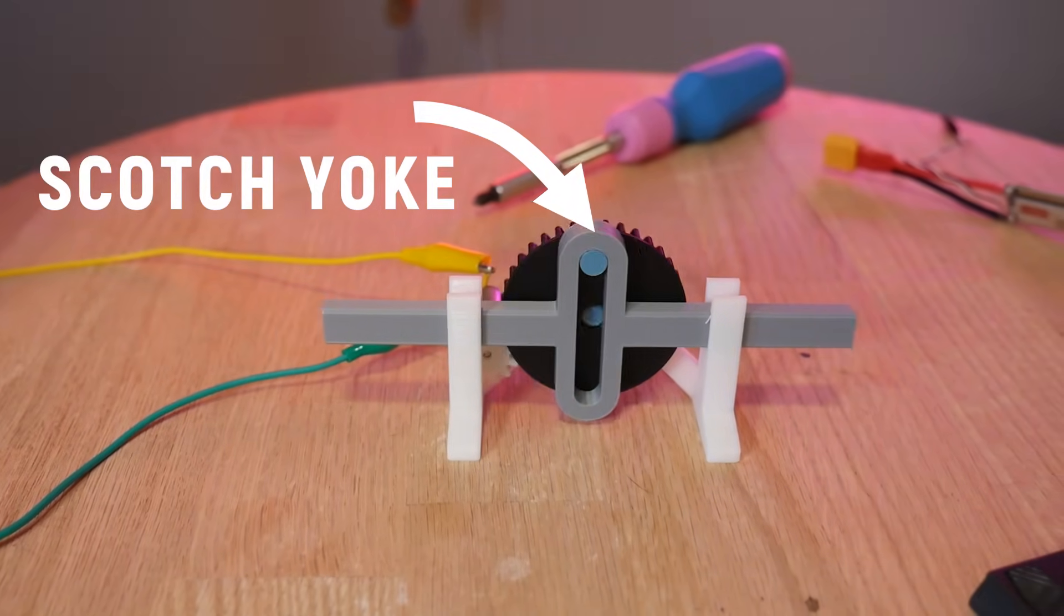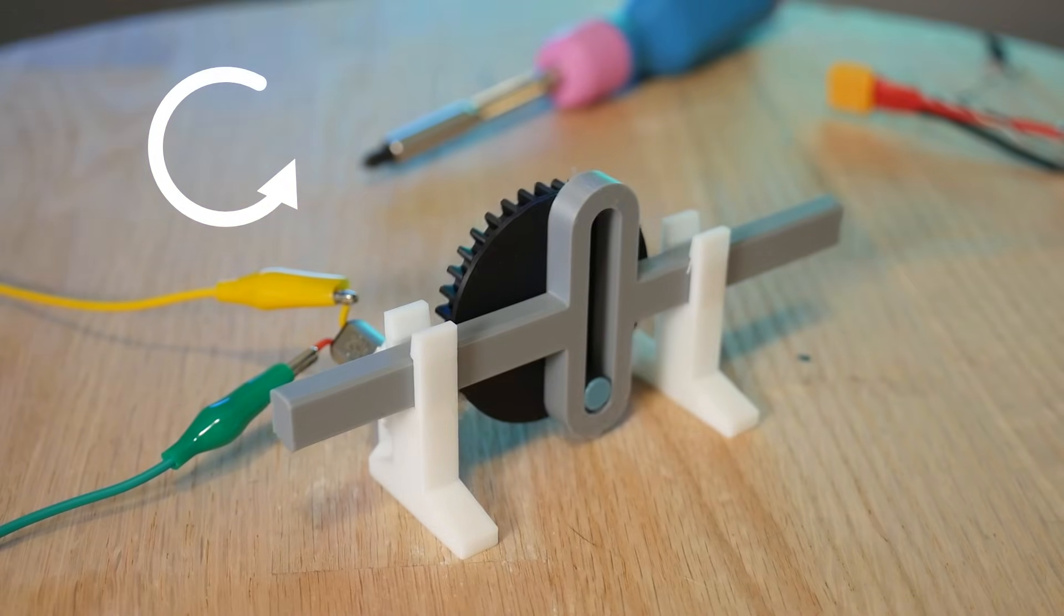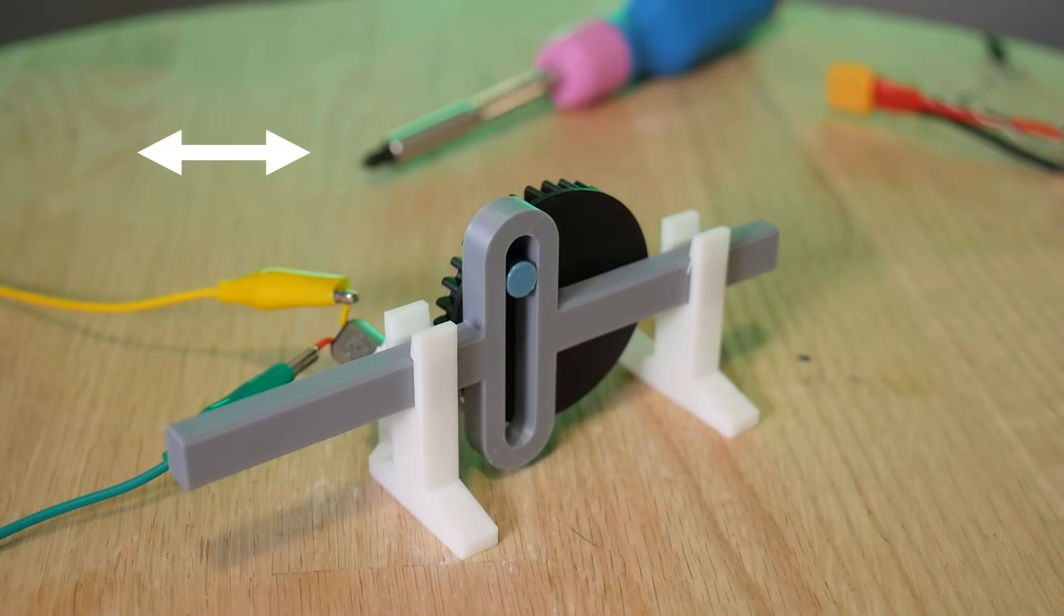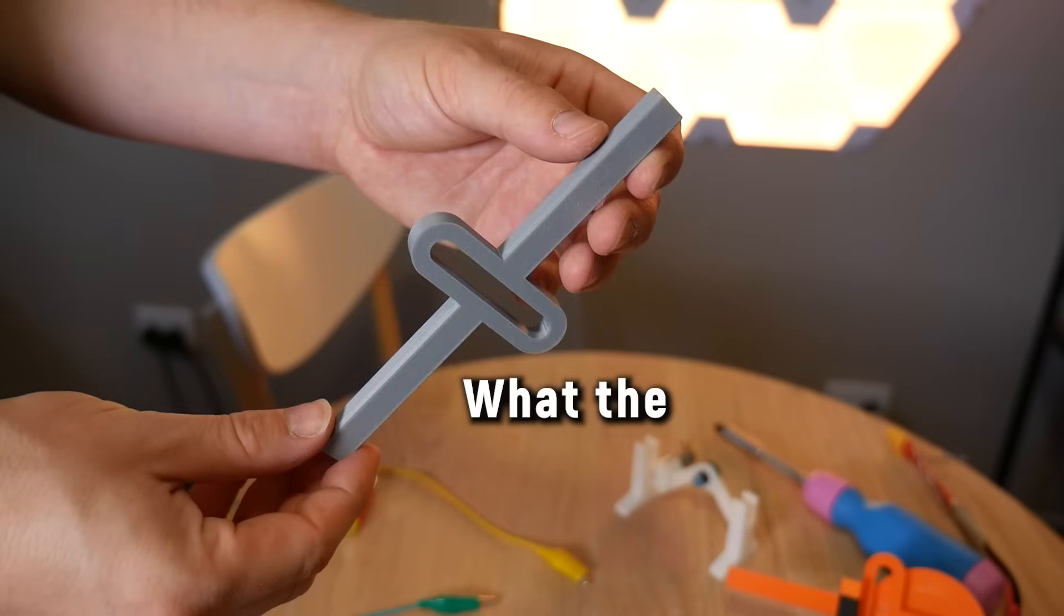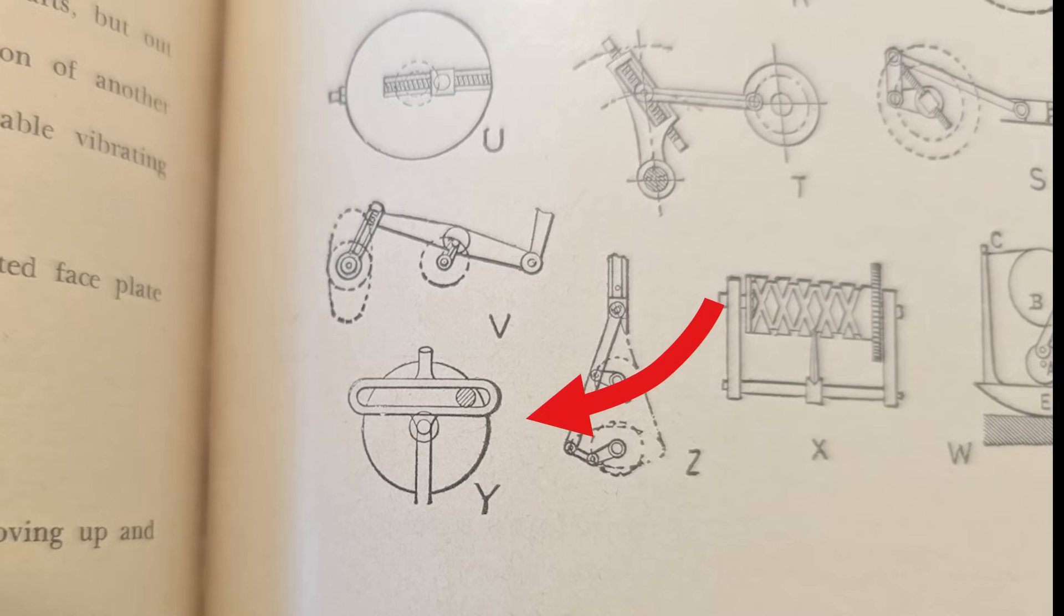This is a Scotch yoke, a mechanism that converts rotary motion into reciprocating linear motion, or vice versa. But what the heck is a yoke, and what makes this Scottish?